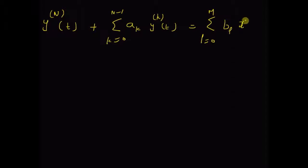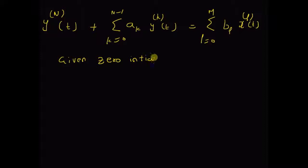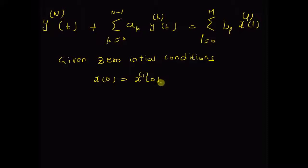of y(t) is equal to the sum L equal to 0 to m, b_L times the Lth derivative of the input x(t), given zero initial conditions. That is x(0), the first derivative at t equal to 0, the initial value of the second derivative, and all the m minus 1 derivatives are equal to 0.